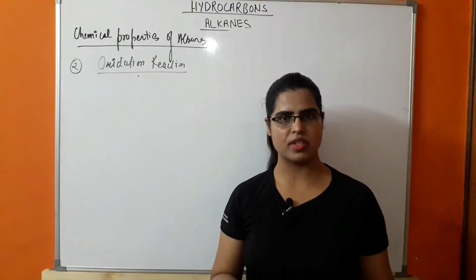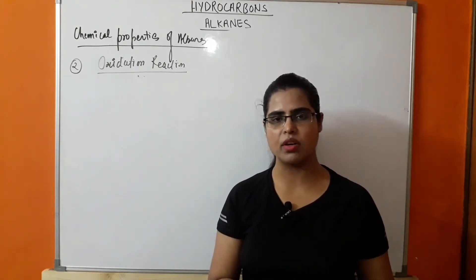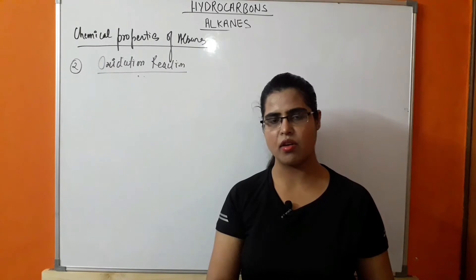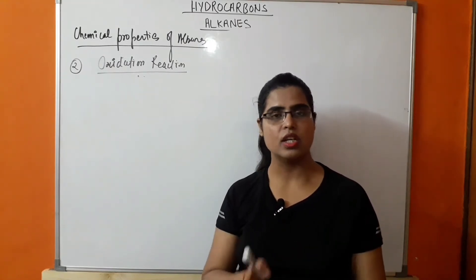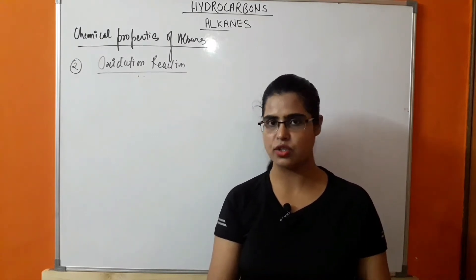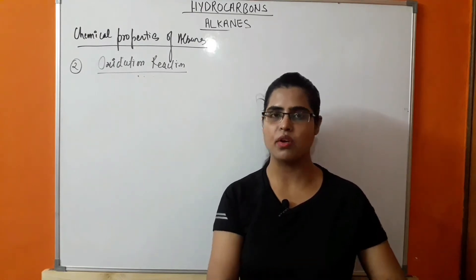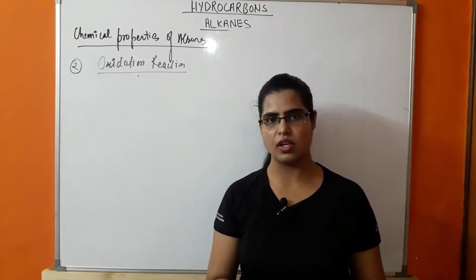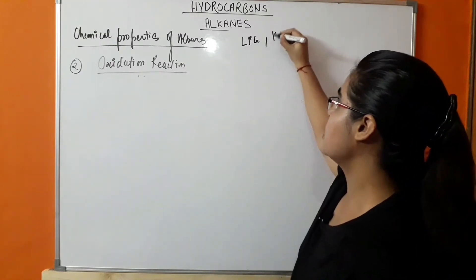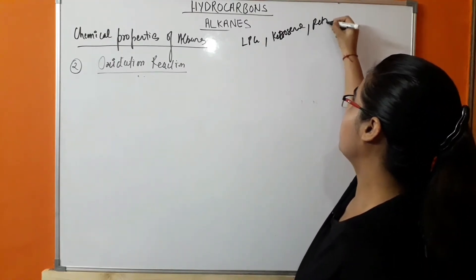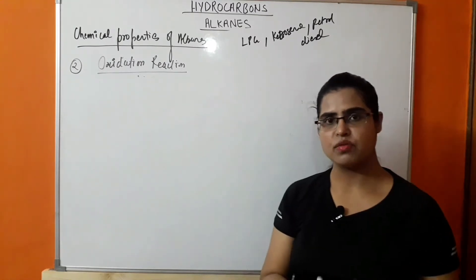The second chemical property represented by alkane is oxidation — one of the most important properties of alkane. In the presence of excess supply of air, complete combustion of alkane takes place, converting it into CO2 and H2O. During this reaction, a large amount of heat is released, because of which alkanes are used as fuel. Examples include LPG, kerosene, petrol, and diesel.